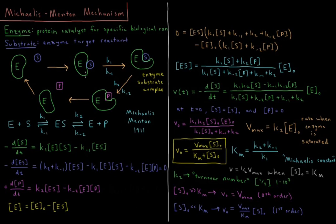This is the chemical kinetics description of the mechanism. We have E plus S — enzyme plus substrate — forming the enzyme-substrate complex ES, with forward rate constant K1 and reverse rate constant K-1. The enzyme-substrate complex then reacts to form enzyme plus product, with forward rate constant K2 and reverse rate constant K-2.